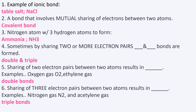Number two: a bond that involves mutual sharing of electrons between two atoms is known as a covalent bond. You would notice the word 'mutual' — that's the clue for covalent bond — mutual sharing of electrons.